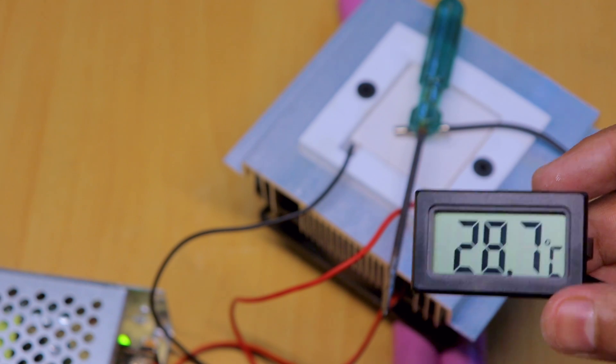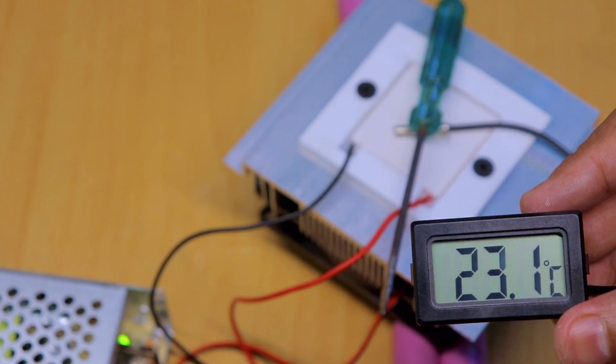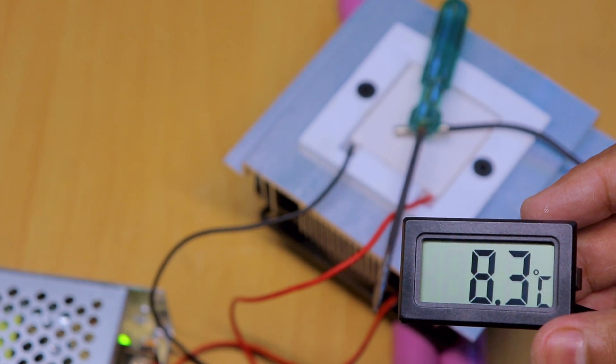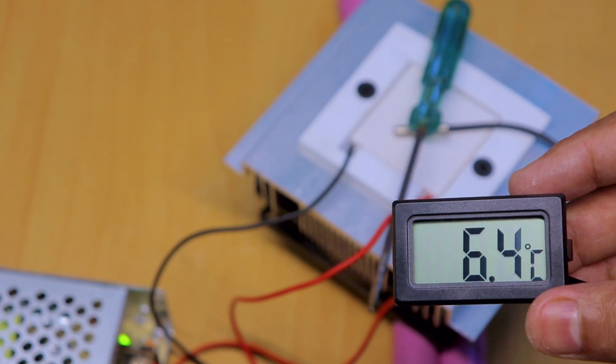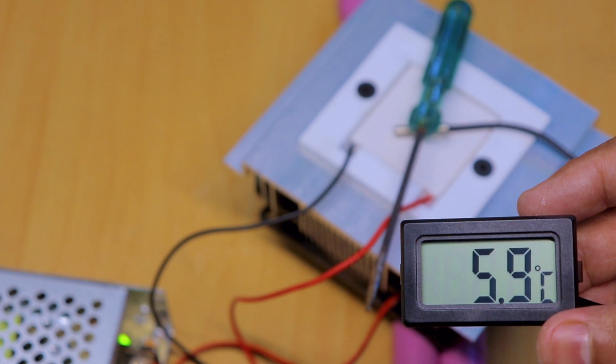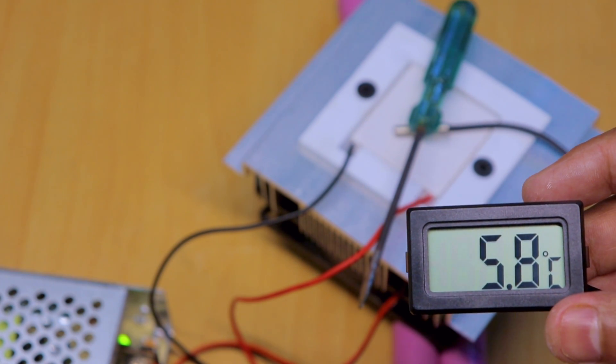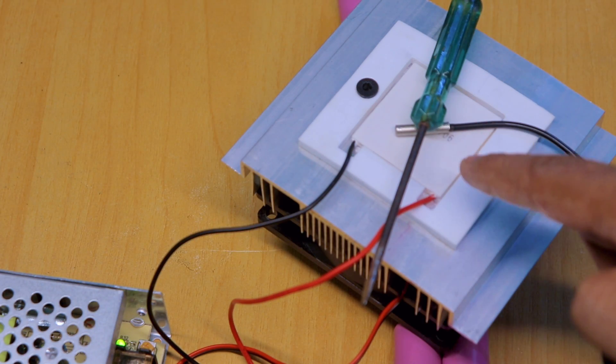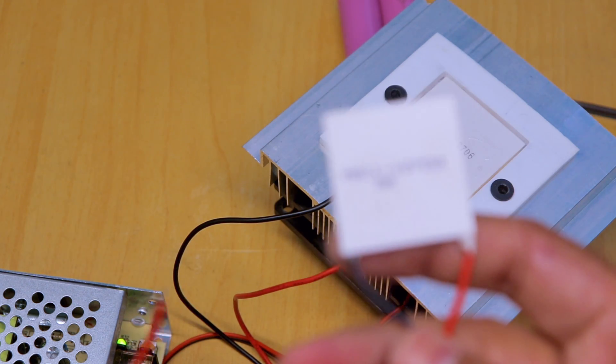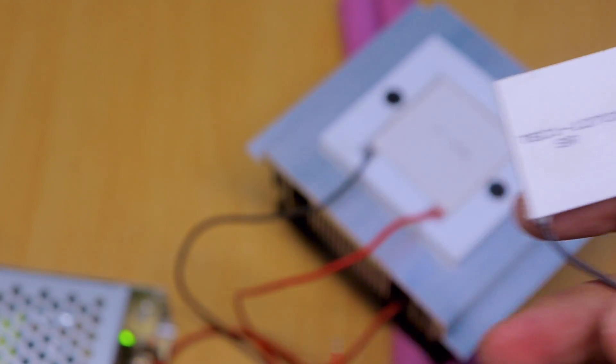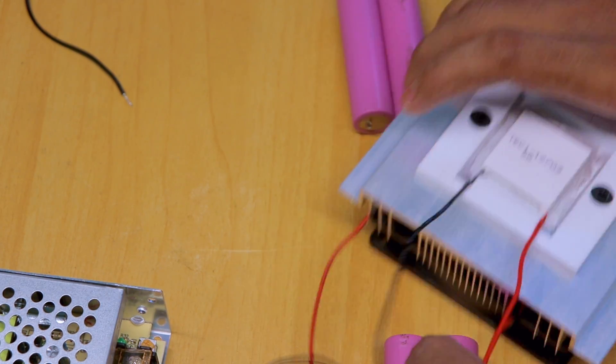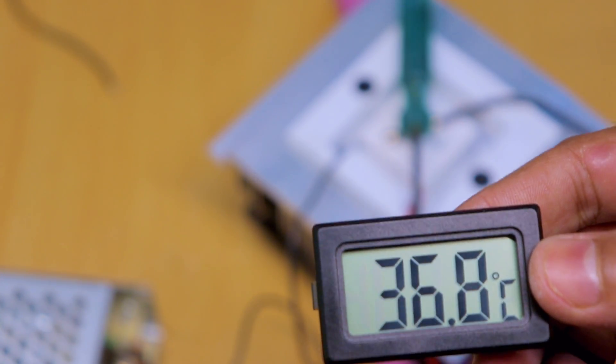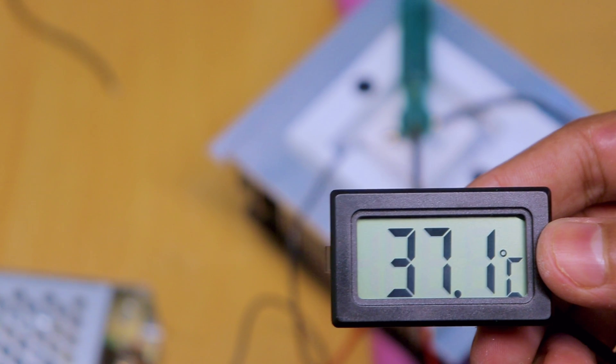It's 31, 1.0 degrees Celsius. Now let's test this one, 12703. Our initial temperature is 36.8. Now turn on the system. You can see the light is glowing and the temperature starts dropping.